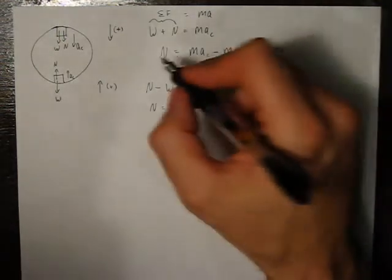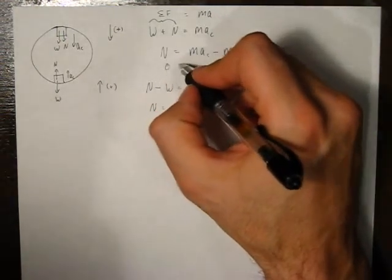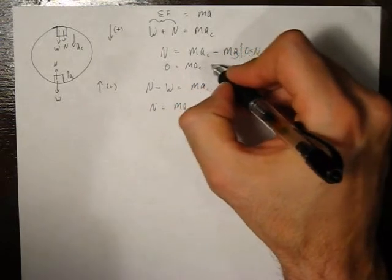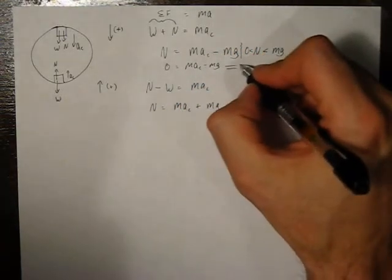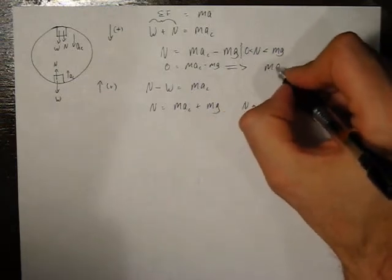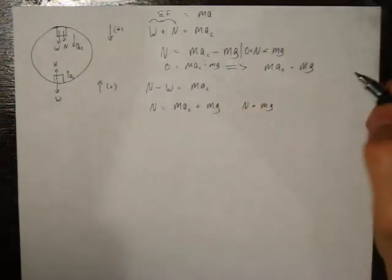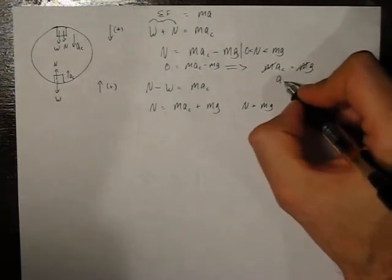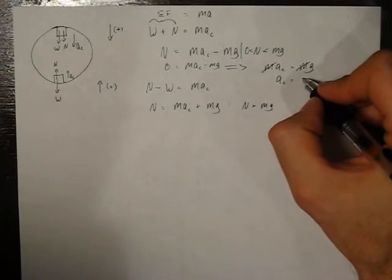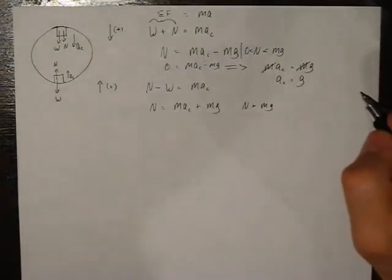So in that moment, if this were zero, that would mean that m a c is equal to m g, showing us that at that moment, the centripetal acceleration is equal to that of gravity.